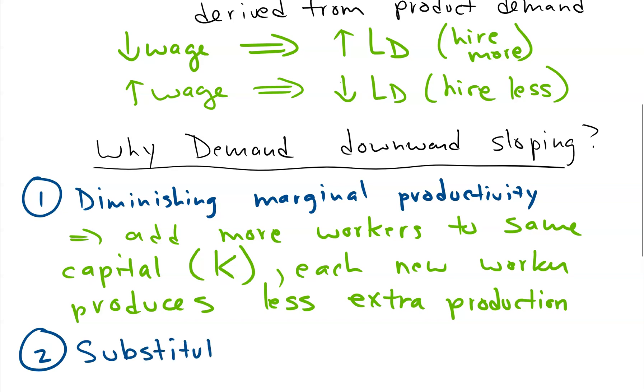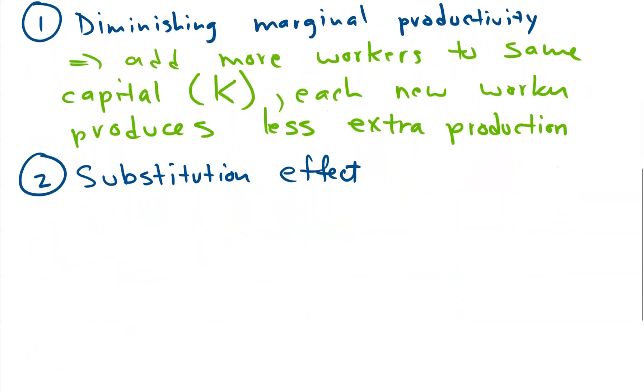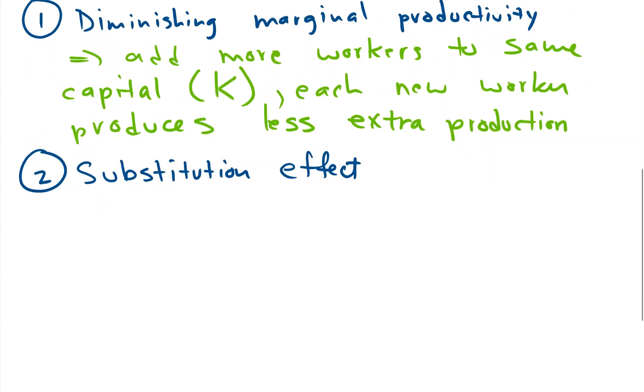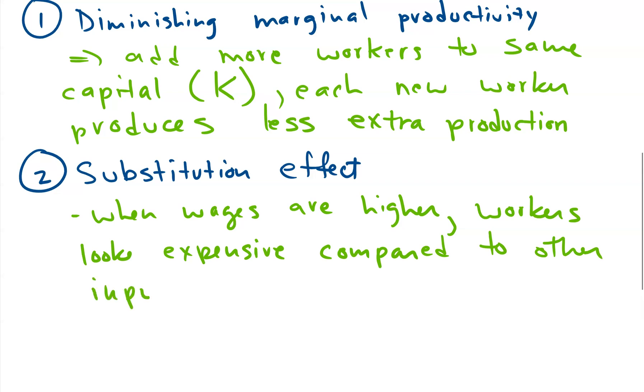A second reason is something called the substitution effect. You've probably heard of substitution effect in another sense before, and it's similar to that one. Basically when the wages are higher, workers or this type of worker look expensive compared to other inputs, at least compared to where they were before. So if you're going along and all your costs don't change, and the cost of workers change. In all of this we're assuming, I should have mentioned that at the beginning, we're always assuming all else equal. So then your workers wages go up, nothing else changes, well now the workers look relatively expensive.